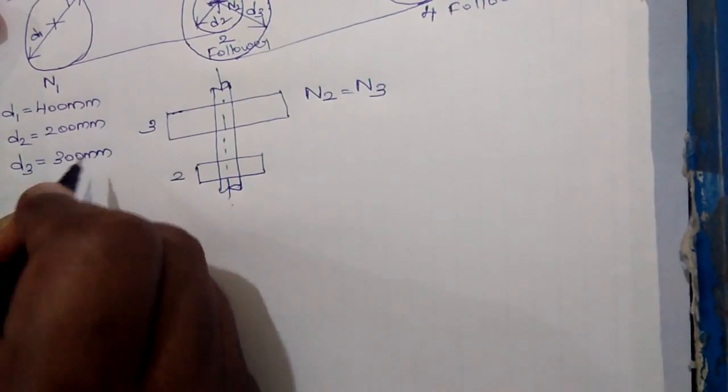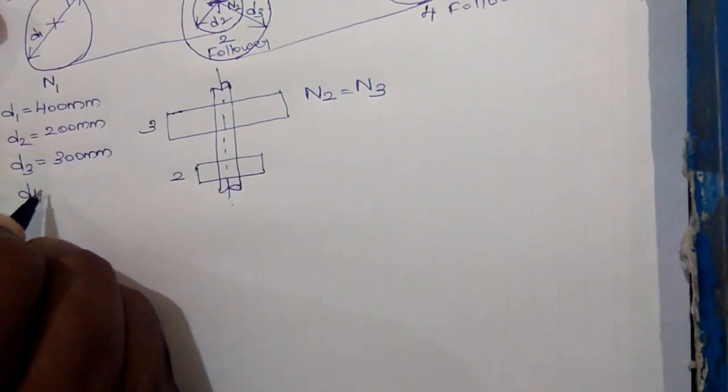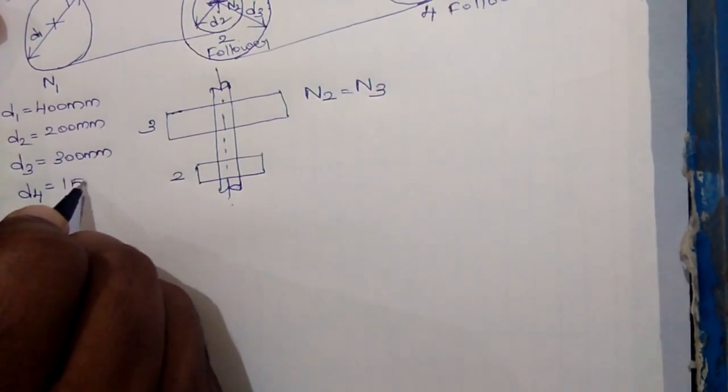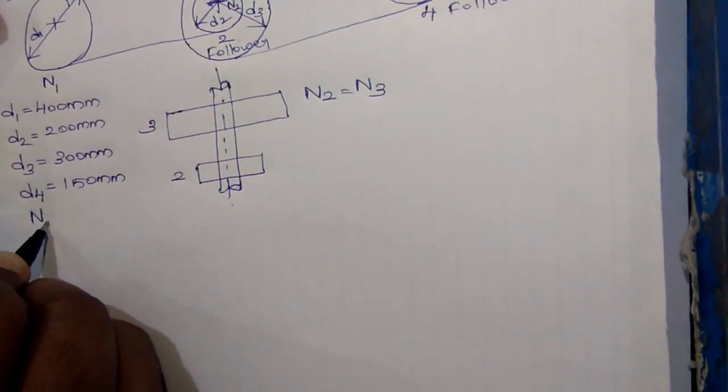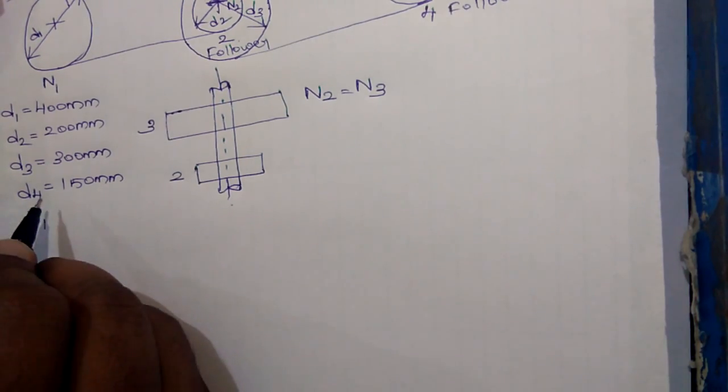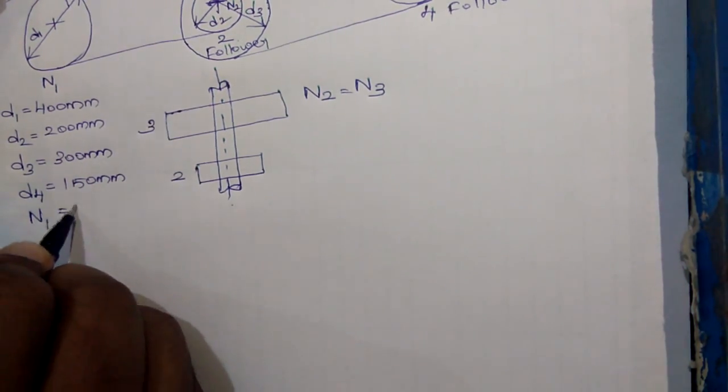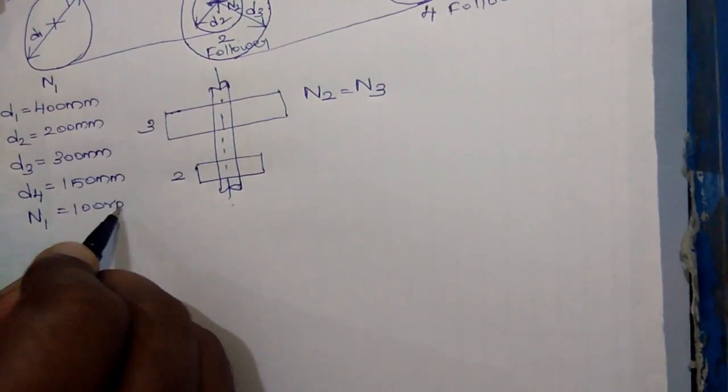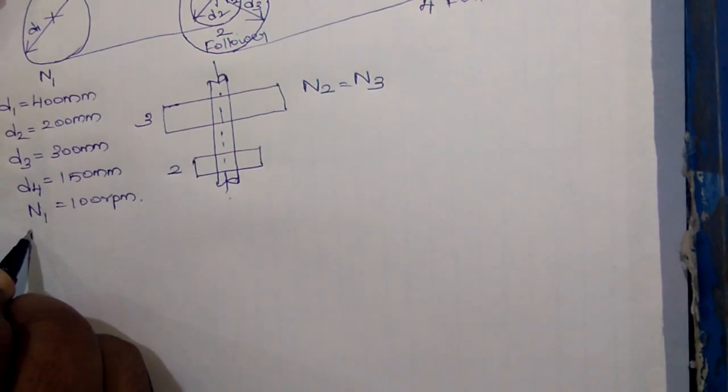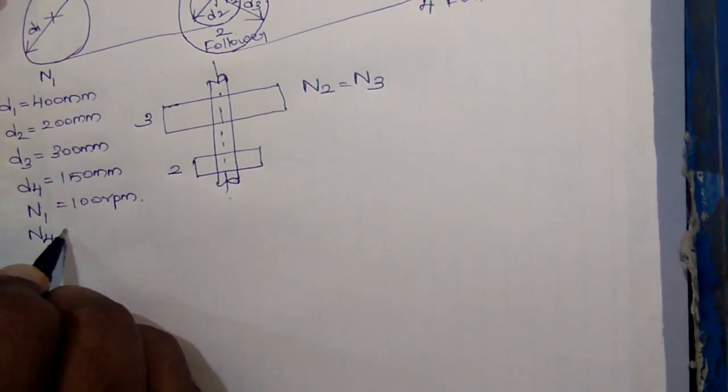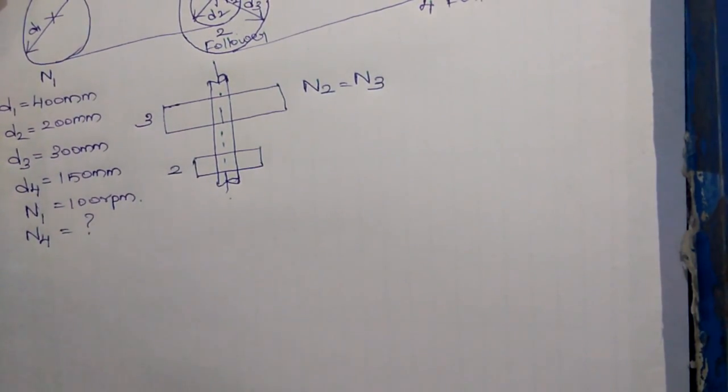d4 as 150 mm, and speed of the driver n1 as 100 rpm. Now let us find the speed n4 of the follower pulley.